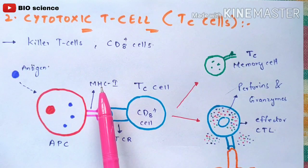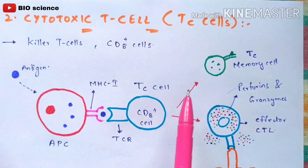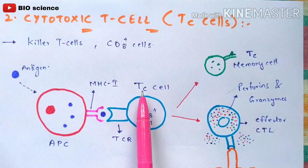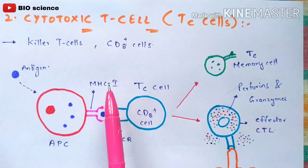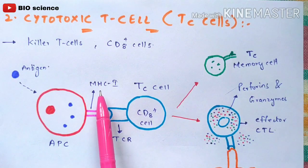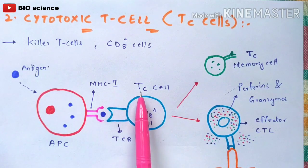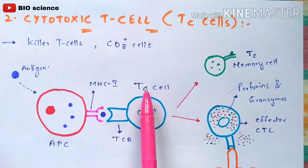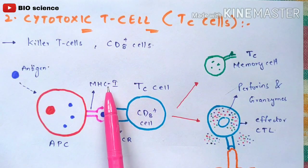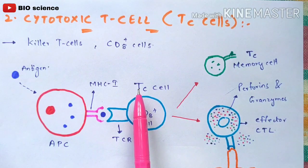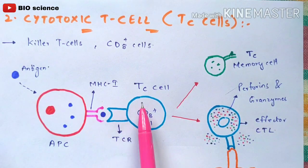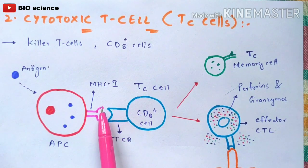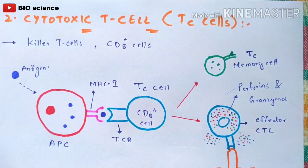Previously we saw MHC class 2 molecules on the antigen presenting cell binding to T helper cells. Here, MHC class 1 molecules are present, so the binding molecule is the cytotoxic T cell. A key rule: MHC class 1 molecules bind only to cytotoxic T cells (CD8 plus), while MHC class 2 molecules bind only to T helper cells (CD4 plus). The cytotoxic T cell binds to the MHC class 1 molecule on the infected cell via T cell receptors.